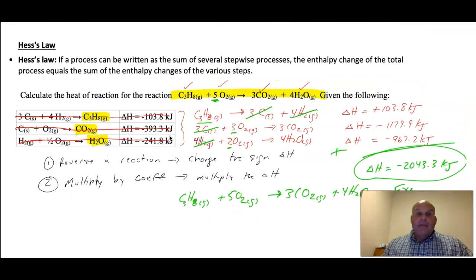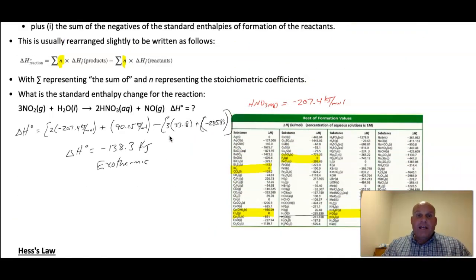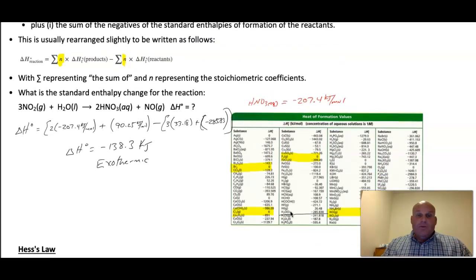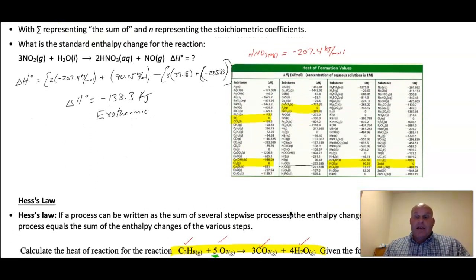Okay. So, that wraps up section three on enthalpy. Really the focus in our problem solving is going to be Hess's law problems and calculating delta H using the sum of the products minus the sum of the reactants from the heat of formation values. That's where we'll spend the majority of our problem solving time in this unit. So, now we have a chance to do lots of practice along the way.